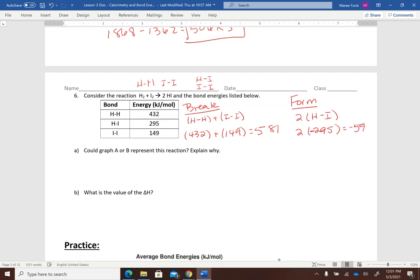When we form our products, we're going to form two hydrogen-iodine bonds. So two times 295 and we get, oh sorry, negative because that is being formed, negative 590. So this one, we've got more energy being released. So graph B would represent this because this is exothermic because 590 is bigger than 580, right? So more energy is being released.